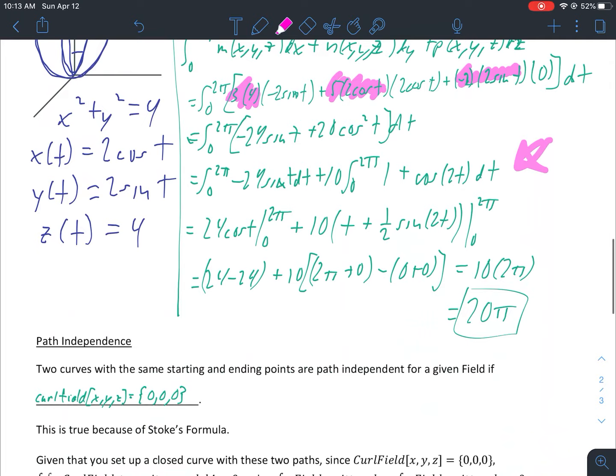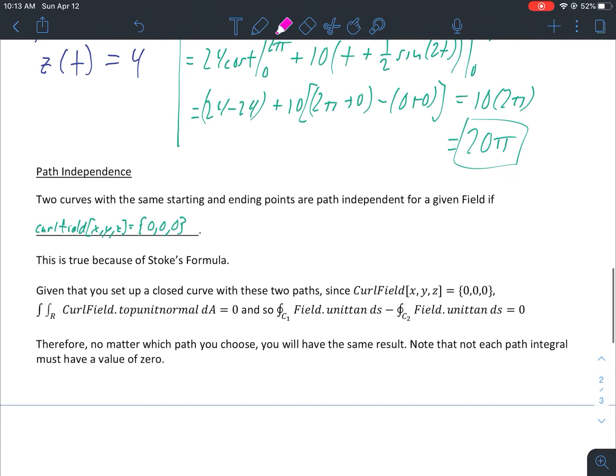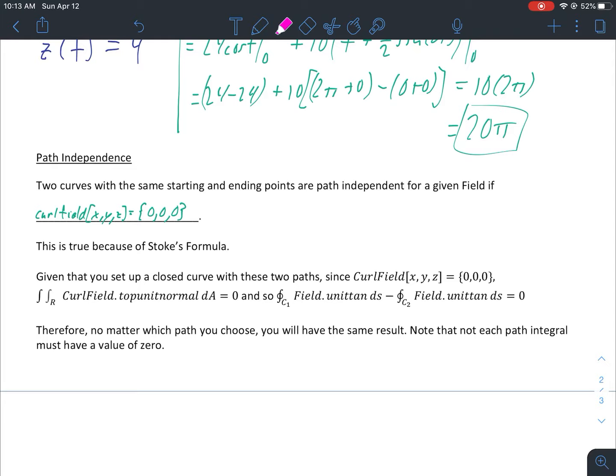Some last things just to kind of clarify a couple things that you might have seen in the basics or tutorials or your lessons or your triads. Two curves with the same starting and ending points are path independent for a given field if the curl field is {0,0,0}, which is true because of Stoke's formula, which again is the big part of lesson 13.